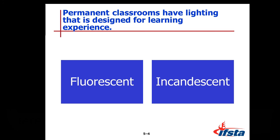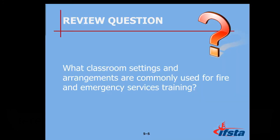Permanent classrooms have lighting designed for the learning experience — either fluorescent bulbs, as we have here at Brooklyn, or incandescent. Lighting is important: if lights are flickering or a ballast is going out in a fluorescent fixture, it's going to bother at least one or two of your students. Make sure you've got proper lighting in the room. Seating arrangements covered include fan, traditional, circle, horseshoe, and conference room styles.